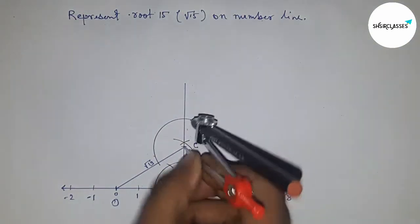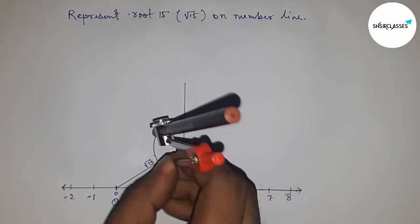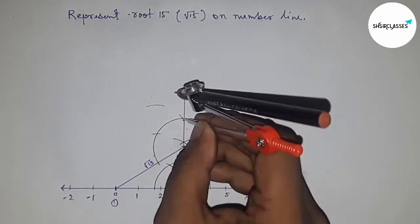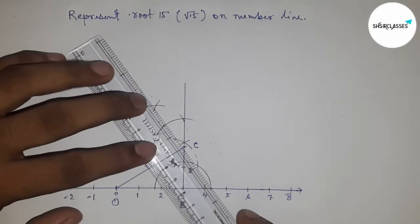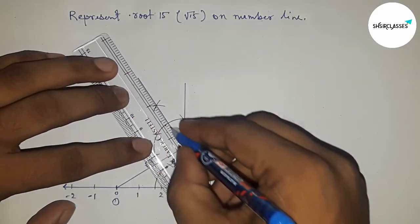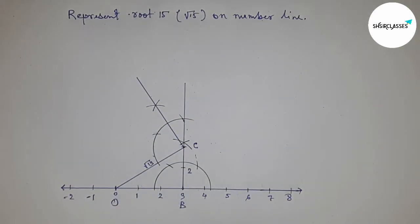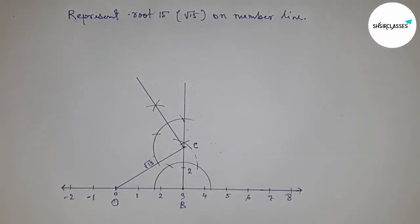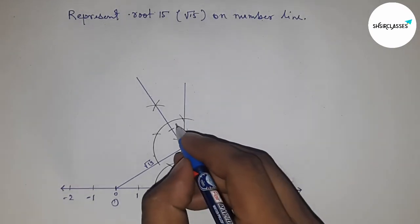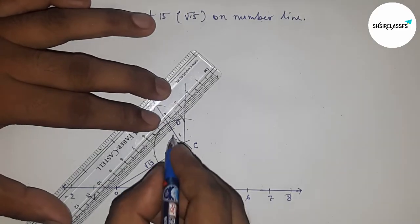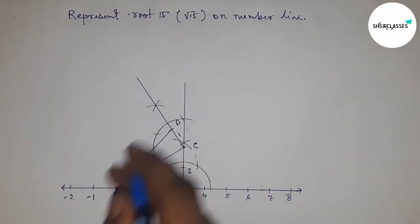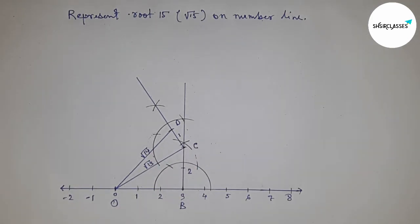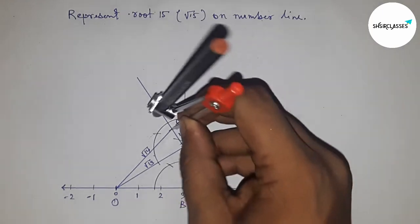Next, constructing root 14. First drawing a perpendicular line on point C. Joining this. Taking the length between any two numbers by compass, putting the compass here, and cutting the line. This is point D and this is one unit length. Joining this — so right angle triangle OCD, and the hypotenuse is obviously root 14.